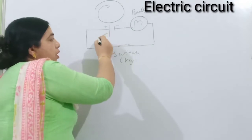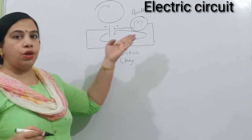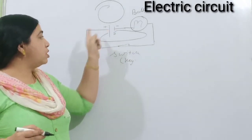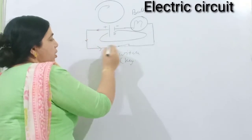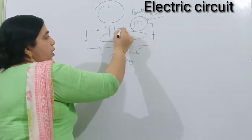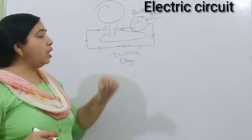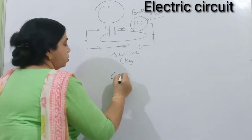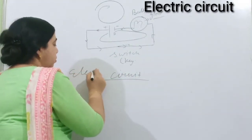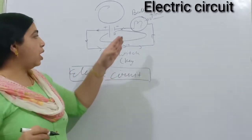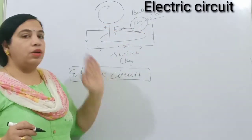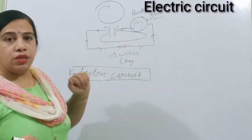Current will start flowing from the positive terminal through the complete circuit — this is a continuous closed path. Current always flows in a continuous path. The charge particle starts flowing from the positive terminal, travels through the circuit, the bulb glows, and then it enters the negative terminal. This is known as the electric circuit. In an electric circuit there will be a continuous path in which electrical appliances, a source of current, and connective wires will be present.